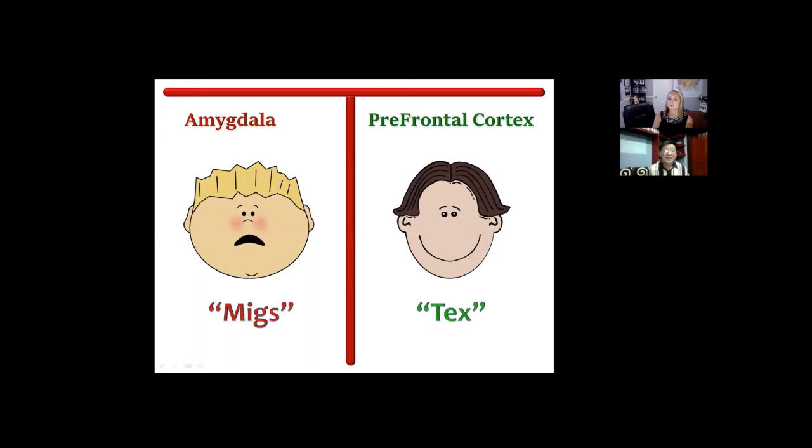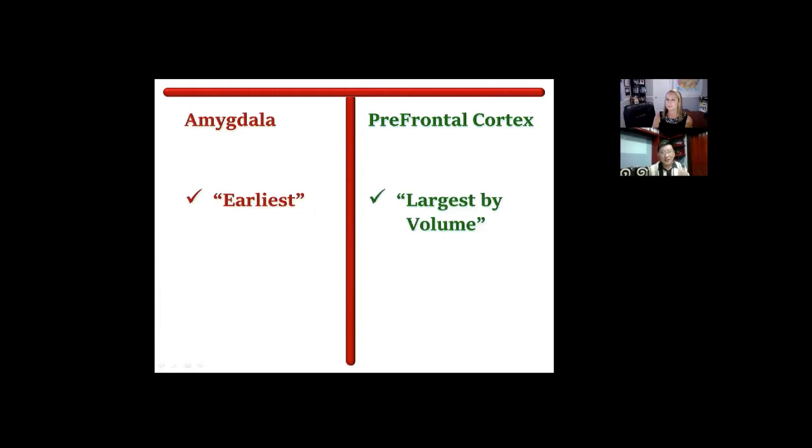I'd like to call the amygdala Niggs. He's impulsive, emotional. The prefrontal cortex I'll call Tex. He's analytical, serious, cognitive. Niggs is the earliest part of the brain that was developed. Tex developed over time as the need for it arose. Not all animals have cortex. We have 67% of our brain area composed of the cortex area.